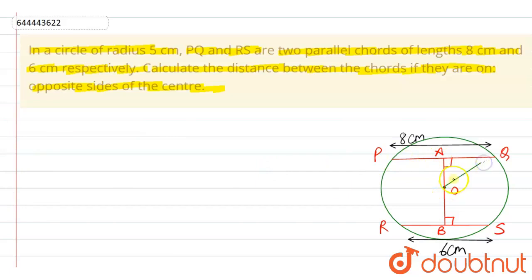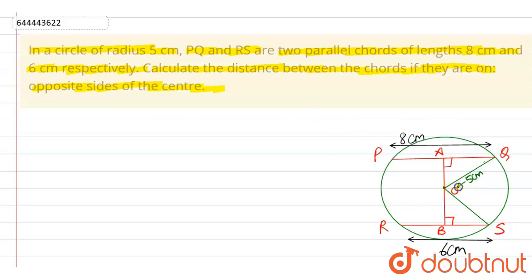Now we can join the origin to point Q and origin to point S. So OQ is the radius and OS is also the radius — radius is given as 5 centimeters. Since B is the midpoint of RS, BS equals 3 centimeters. Similarly, point A is the midpoint of PQ, so AQ equals 4 centimeters.